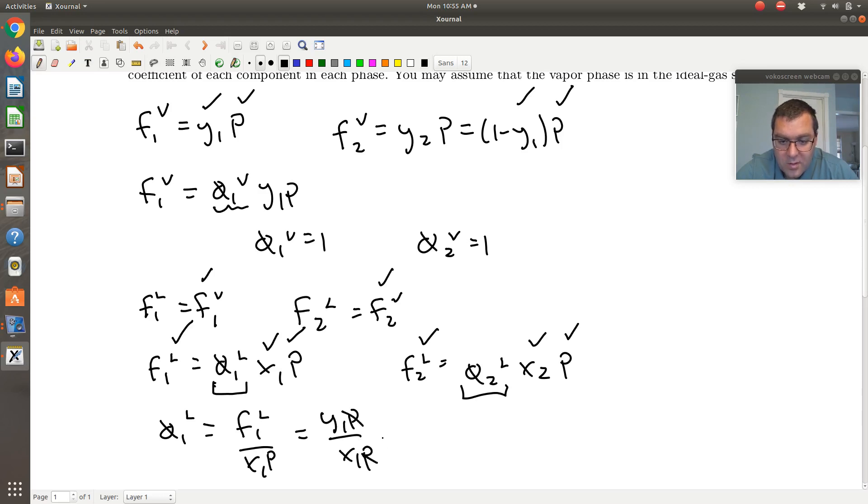So P's can cancel, and I'm left with Y1 over X1. So phi1L is just equal to Y1 over X1. That's actually pretty cool.